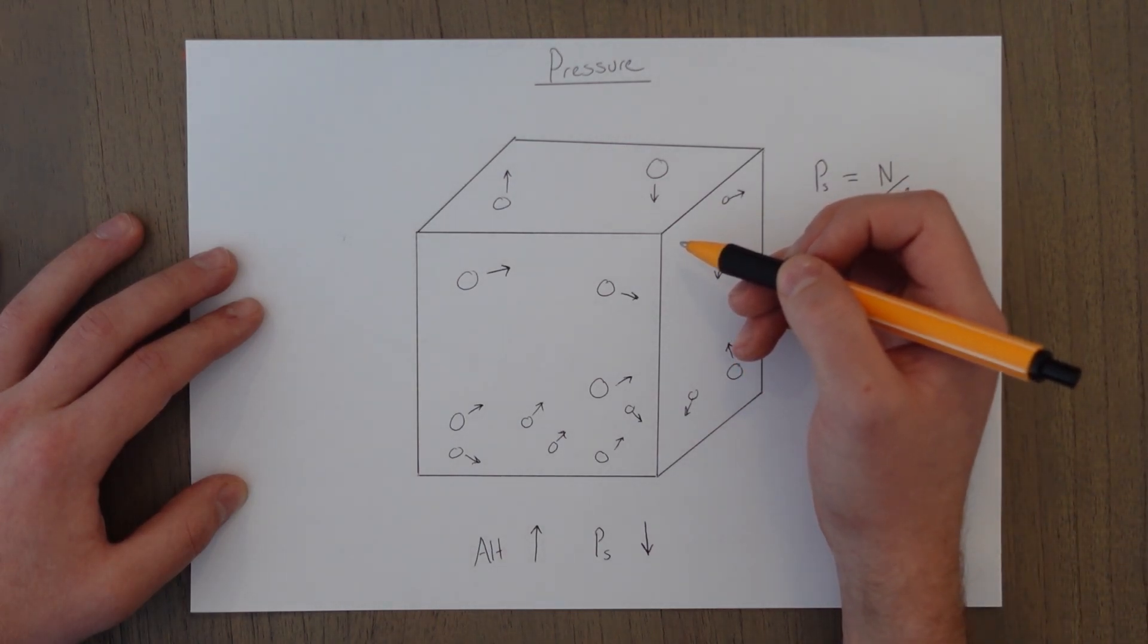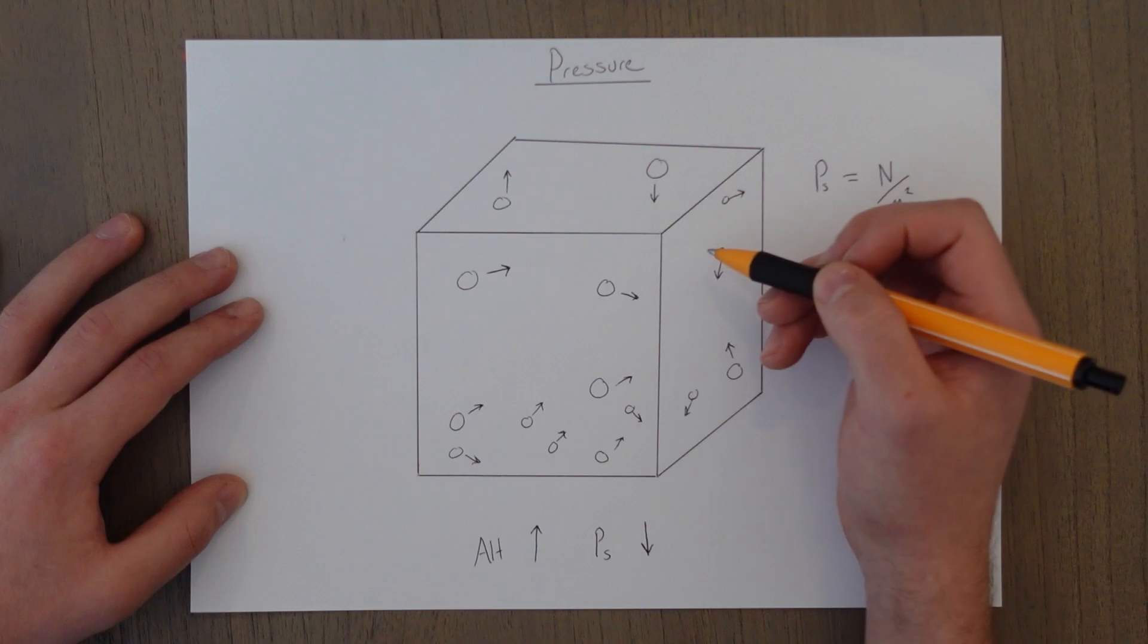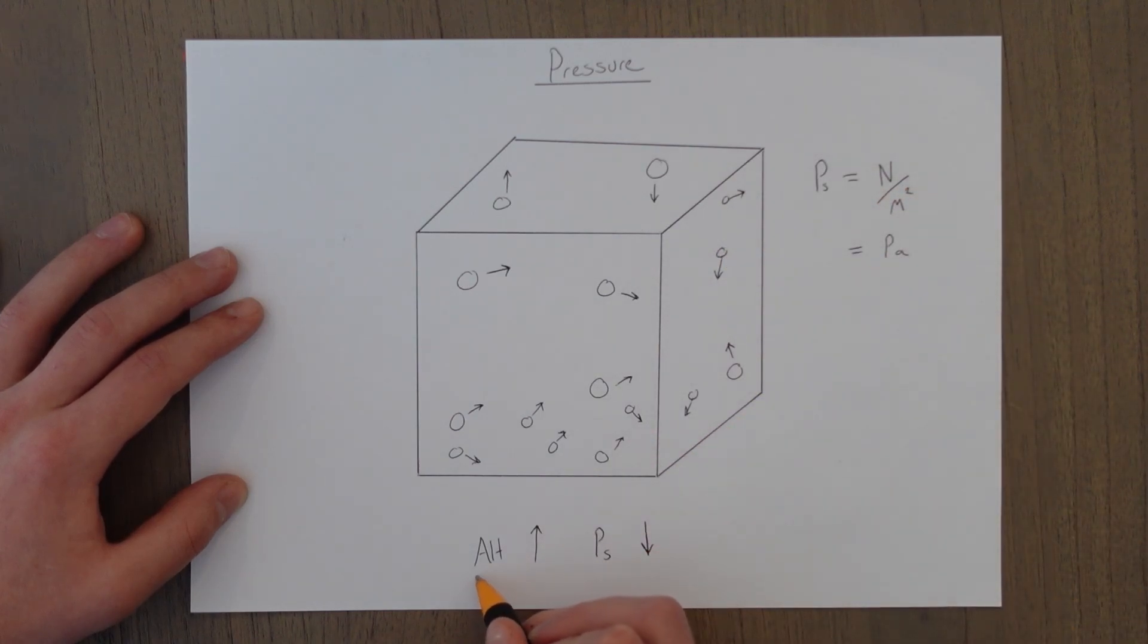colliding less, and the pressure is lower. So we can say as altitude increases, our static pressure decreases the same way as density decreases.